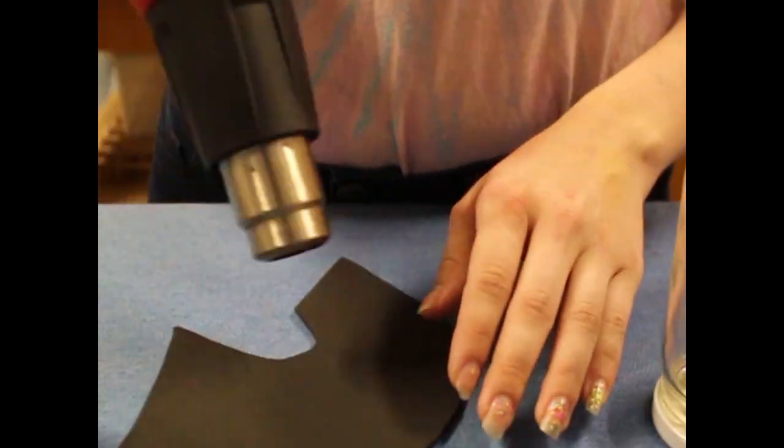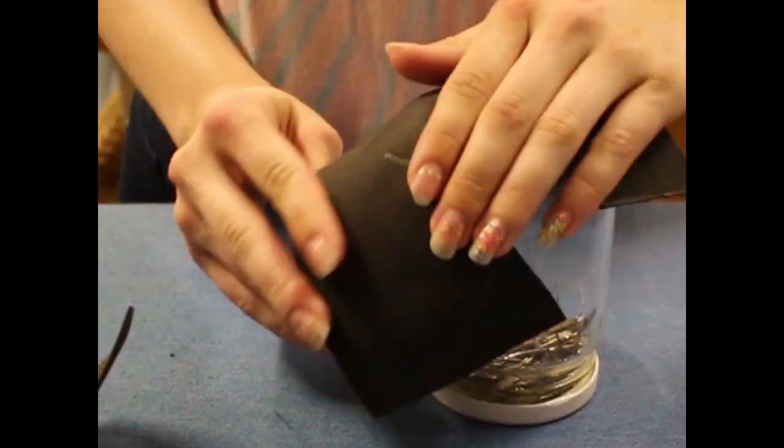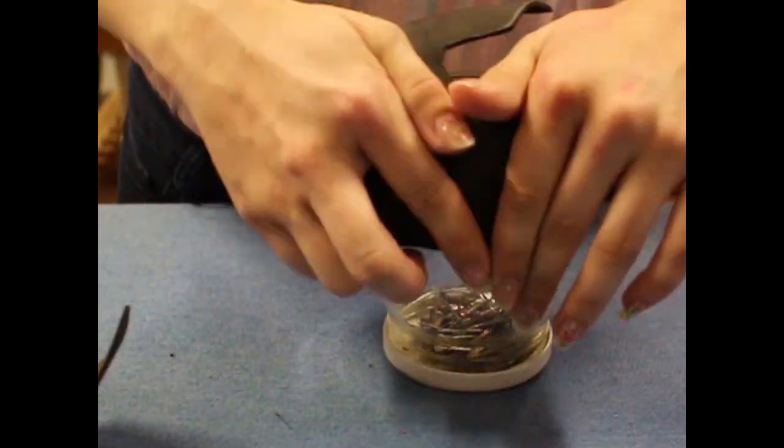From here you will use a heat gun to warm up the sides of the head pieces and roll them over a curved surface like a heat safe jar.